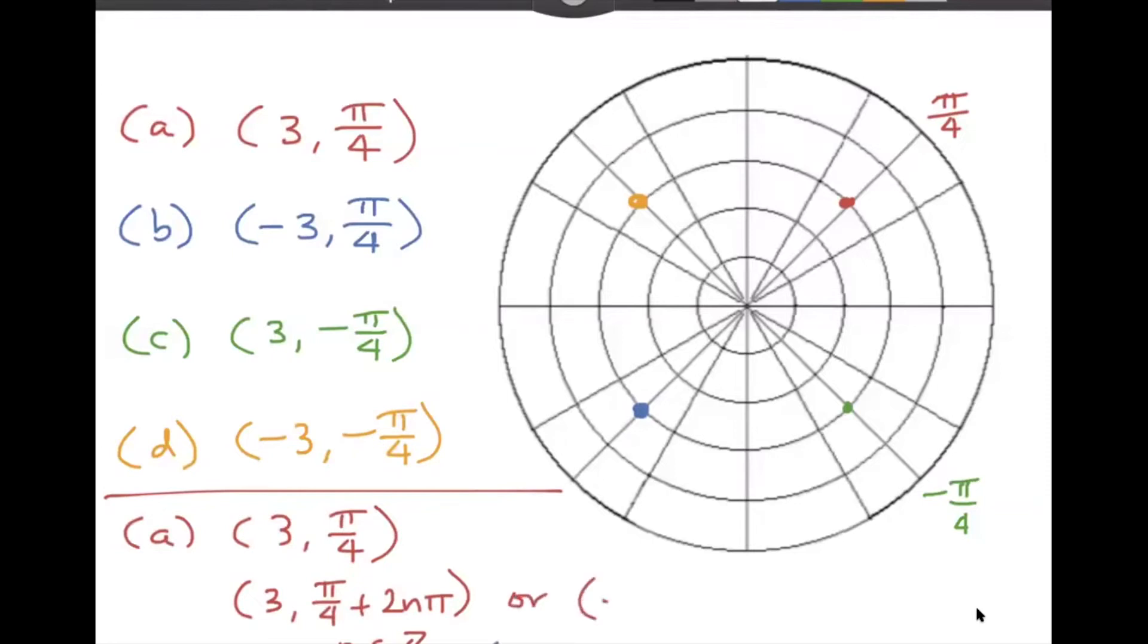And then remember, we also have to allow for R being negative. So if R was negative three, then we would need to start along this angle down here, which is five pi over four. So then that would be negative three comma five pi over four. And again, you can add or subtract any multiple of two pi. So hopefully that makes sense.